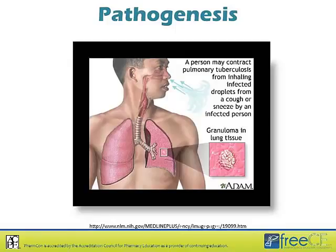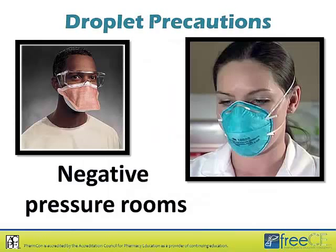In terms of pathogenesis, tuberculosis is contracted from inhaling infected droplets that can be expelled into the air by a cough, a sneeze, or even just talking with an infected person. From a public health perspective, the types of precautions we take are very important in preventing the spread of tuberculosis. People are placed on droplet precautions when we're concerned they might have pulmonary tuberculosis — placed in negative pressure rooms.